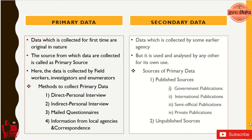Moving to secondary data: data which is collected by some agency and stored previously — which we may not know about — but is used and analyzed by any other for its own use. We have some sources like published sources and unpublished sources, such as government publications, international publications, semi-official publications and private publications.